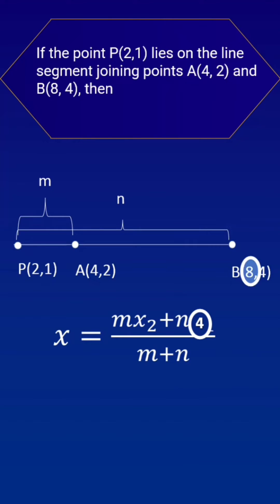Here x1 is 4, x2 is 8, x is 2. By cross multiplication we get 2m plus 2n is equal to 8m plus 4n.